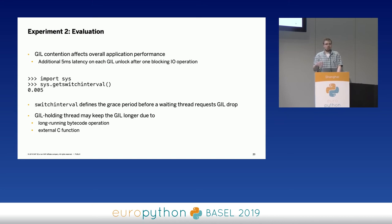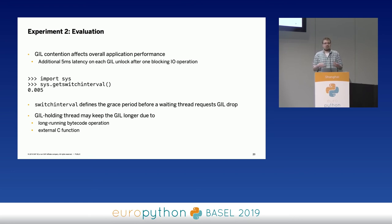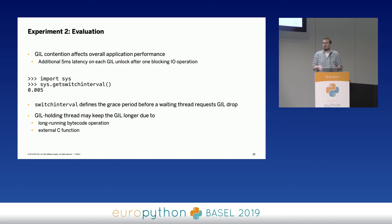Every time a thread would like to acquire the GIL and finds someone else holding it, it goes into a condition and sleeps up to five milliseconds. If the GIL is still held, it sends out a request to drop the GIL so the other thread releases it. This means this can already add additional latency — if you only have Python instructions, you will basically always get a stable latency of around five milliseconds. A thread holding the GIL can also hold it longer than five milliseconds because some bytecode operations take longer or you're calling an external C function that doesn't know about the GIL and doesn't release it.